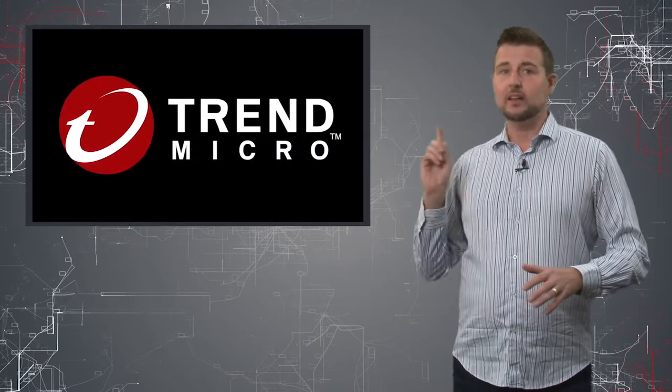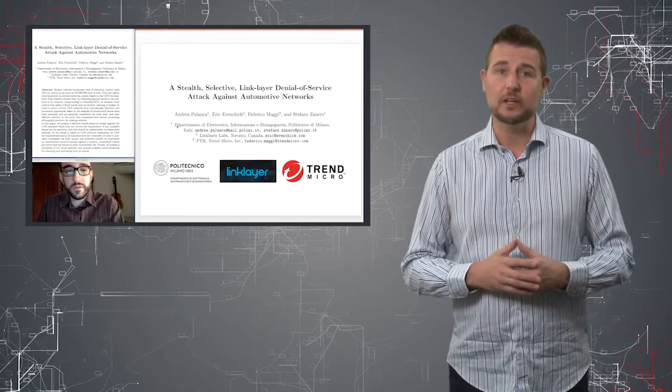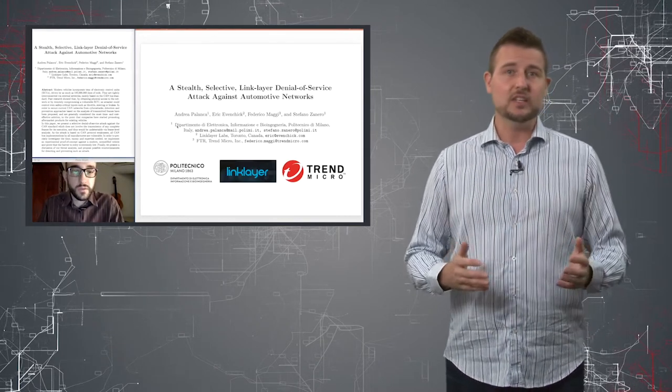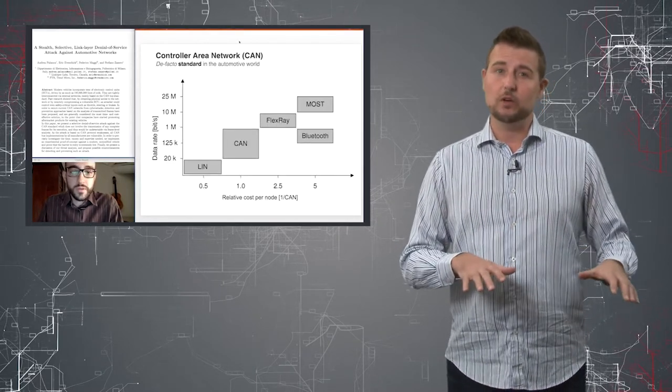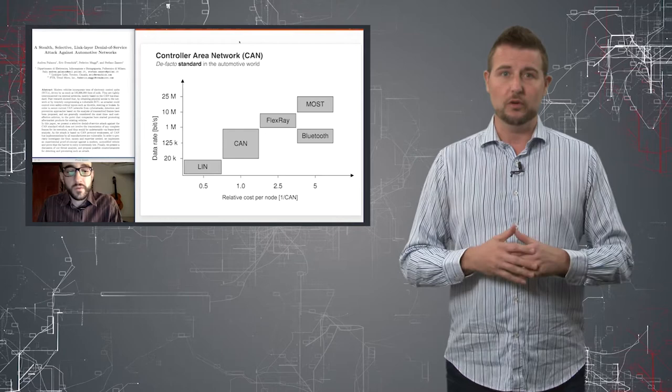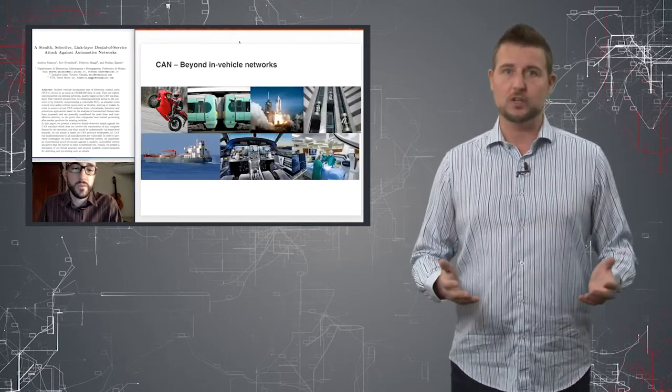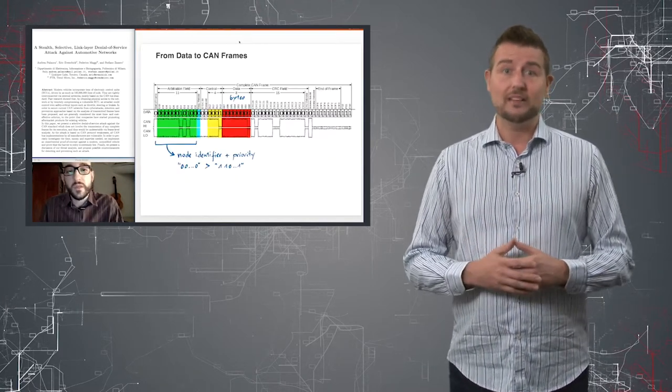Trend Micro released great materials including a 30-minute video explaining the attack. The CAN or controller area network is the network between ECUs or electronic computer units in your car—things that control braking, your drivetrain, safety bags, airbags, and things like that.